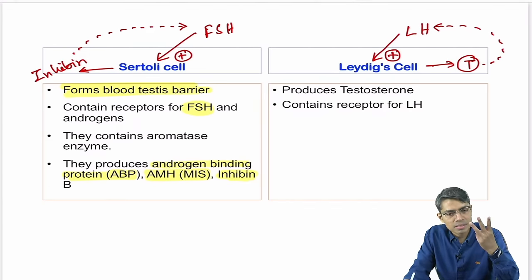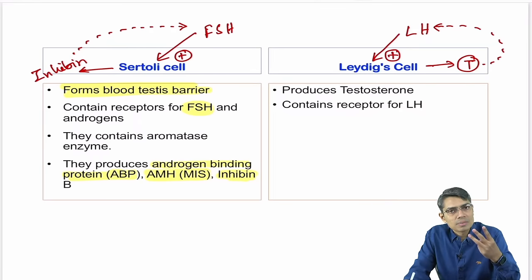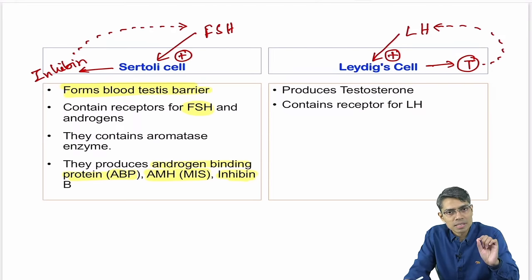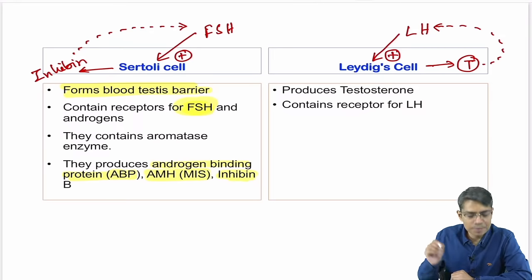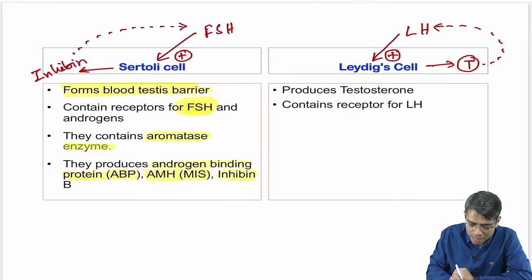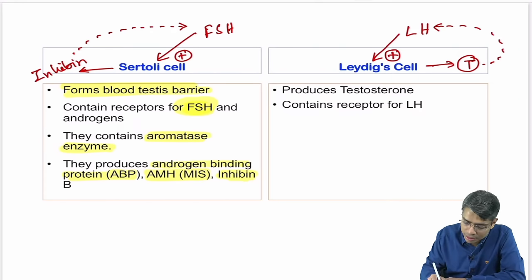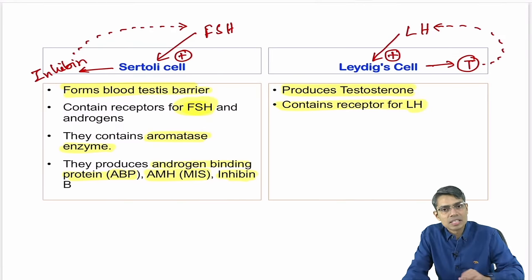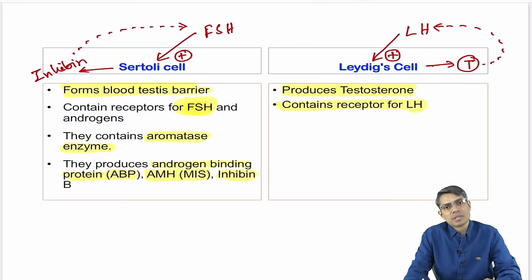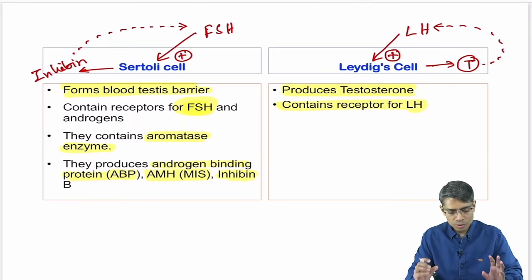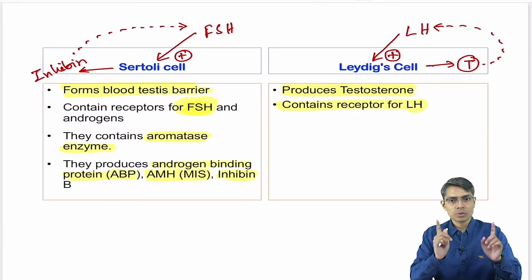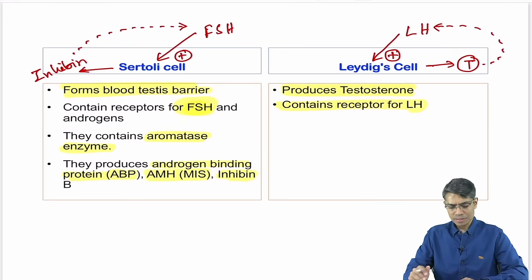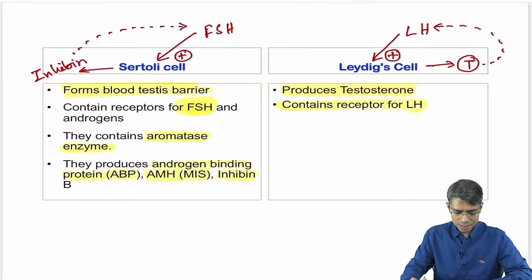To summarize: Sertoli cell produces inhibin, Müllerian inhibitory substances, and androgen binding protein; forms blood-testis barrier; is stimulated by FSH; contains aromatase. Leydig cell produces testosterone and is stimulated by LH. Many FMG questions come from this topic.